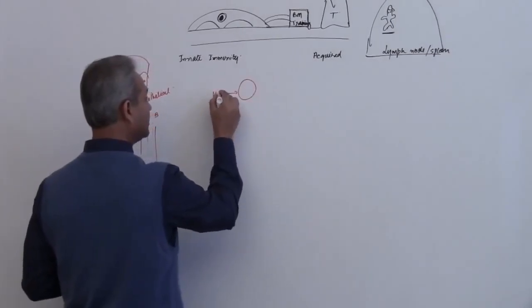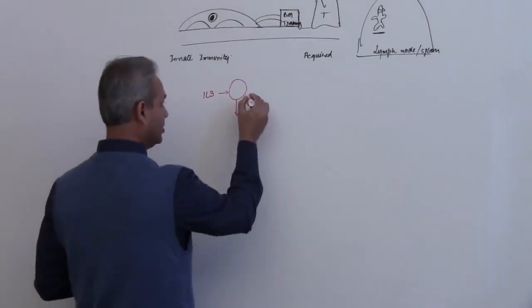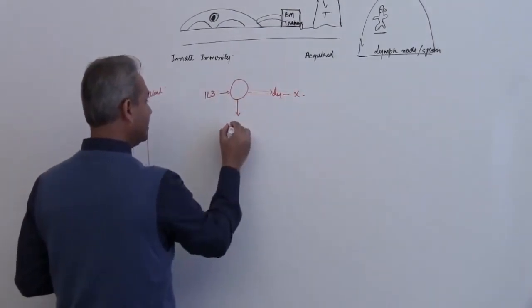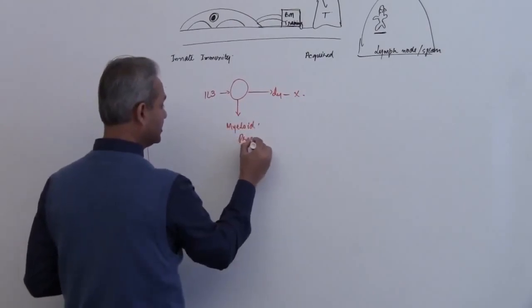Hemocytoblast interleukin-3, then we come to the myeloid. I am not talking about lymphoid at this time, so myeloid progenitor cell, progenitor.